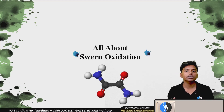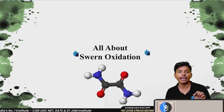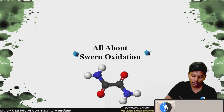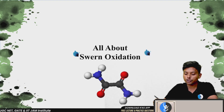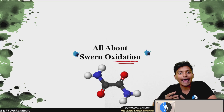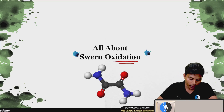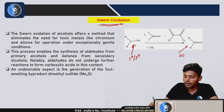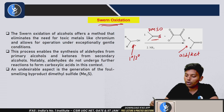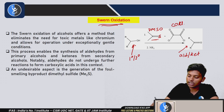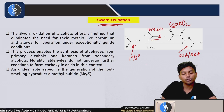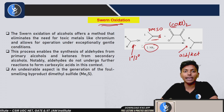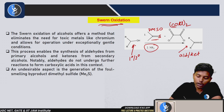Hello students, welcome. Today we are learning a very good reaction called Swern Oxidation. There are many oxidation reactions we have learned, but Swern Oxidation is a very good method to oxidize alcohol to aldehyde or ketone. In Swern Oxidation, a primary or secondary alcohol is converted to an aldehyde or ketone in the presence of DMSO (dimethyl sulfoxide), COCl₂, and in the second step, an amine base.